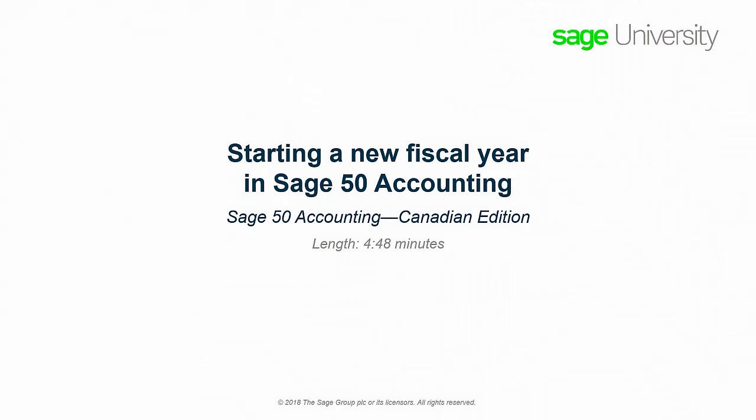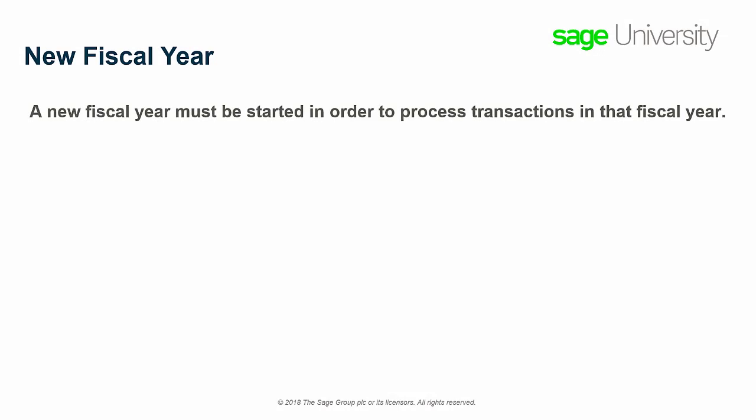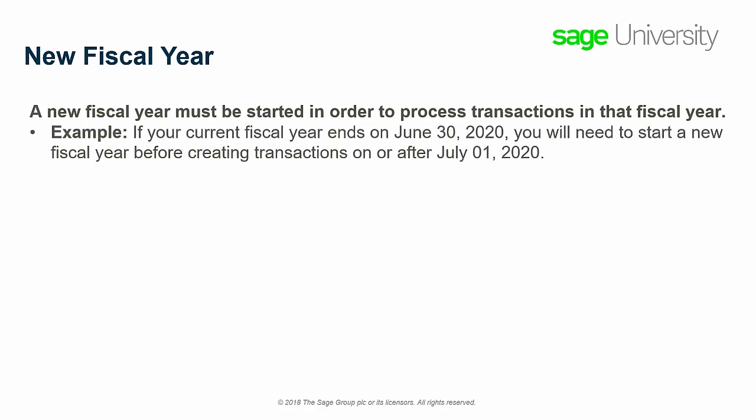Over the next few minutes, we will describe what a fiscal year end is and how to process it in Sage 50. A new fiscal year must be started in order to process transactions in that fiscal year. For example, if your current fiscal year ends on June 30, 2020, you will need to start a new fiscal year before creating transactions on or after July 1, 2020.